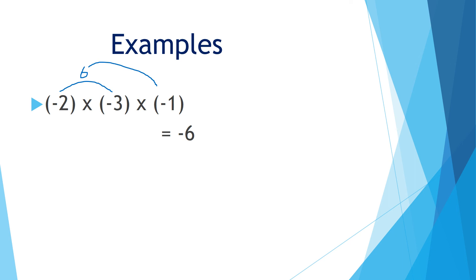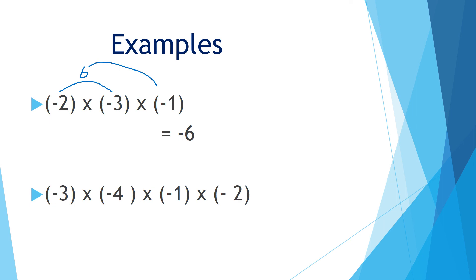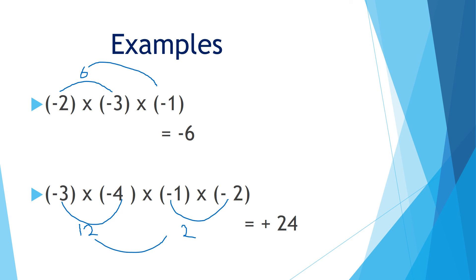The next example is minus 3 into minus 4 into minus 1 into minus 2. Here we have 4 negative integers — 4 is even — so the sign will be positive. Now we multiply the numbers: 3 fours are 12, and 1 twos are 2. Now we multiply 12 and 2: 12 twos are 24, and the sign will be positive. So minus 3 into minus 4 into minus 1 into minus 2 is plus 24.